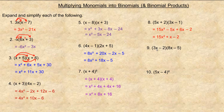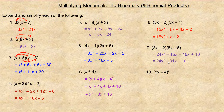For number nine, we'll expand 3x into the (8x minus 5) first: 3x times 8x is 24x squared, and 3x times negative five is minus 15x. Now multiply negative two by both terms: negative two times 8x is minus 16x, and negative two times negative five is plus ten. Combining like terms: negative 15x plus negative 16x is negative 31x. So the answer is 24x squared minus 31x plus ten.